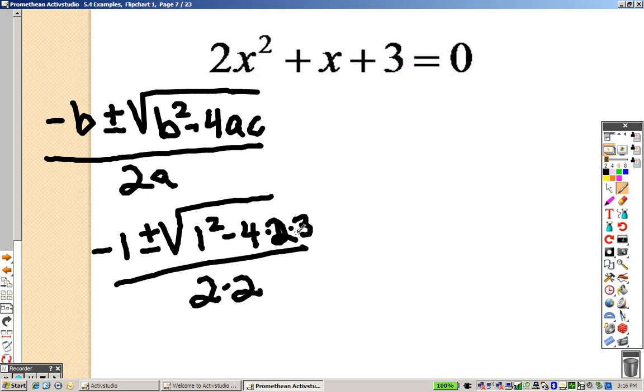So, underneath the root is getting negative 23. So, I get negative 1 plus or minus the square root of negative 23 over 4.